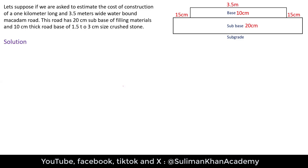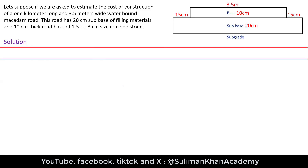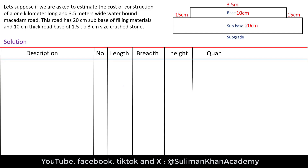In the solution, we present everything in a nice table format. You can also calculate these things in Excel — the next example will be in Excel to learn how to determine quantities of road materials. The table has the same structure we've used before for building estimation: description, number of members, length, breadth, height, quantities, and remarks for detailing. The first item is subgrade preparation.